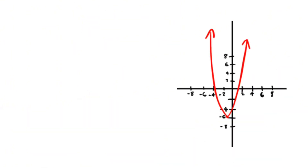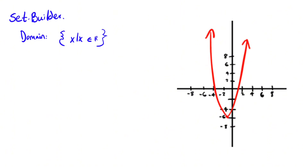Let's try it. Here is our graph. Let's find the domain and range. First, let's use set builder notation. Add the squiggly bracket and x such that x. The symbol that looks like the lowercase Greek letter epsilon is read as 'element of,' and since the domain is all real numbers, you can write an R. You can see the limit may also be the lowest point. In this case, it's negative 6. So, y such that y is greater than or equal to negative 6.